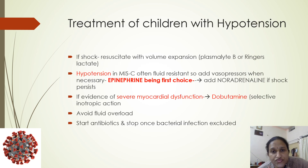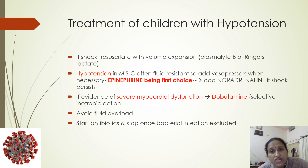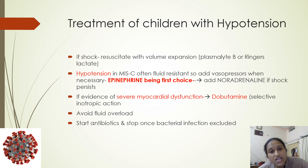If the child presents in hypotension or shock, we first give fluid boluses and resuscitate with volume expansion using Ringer's lactate. Hypotension in MIS cases is mostly fluid-resistant, so vasopressors must be added — epinephrine is the first choice, with norepinephrine added if shock persists. If there is evidence of severe myocardial dysfunction, dobutamine is a better choice due to its selective inotropic action. We must avoid fluid overload and start antibiotics, stopping them once infection is excluded.